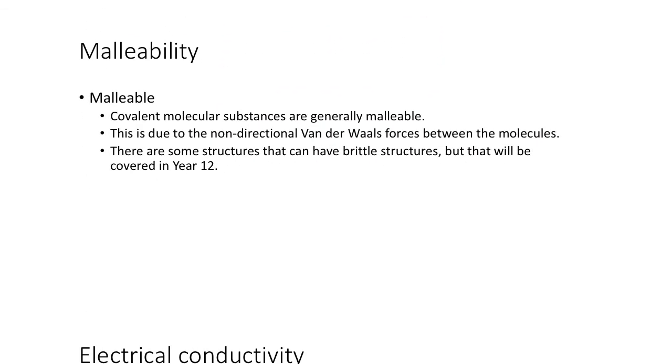First of all, malleability. They are generally malleable. Covalent molecular substances have a large range because how they arrange themselves into those small groups can vary greatly, so we can't say all of them have these properties, but they're generally more malleable, and this is due to the non-directional van der Waals forces between the molecules. It's again that non-directional idea so that if you move the atoms, the bonding between them still exists, and so therefore even though it's weak because they're van der Waals forces, they are generally malleable.